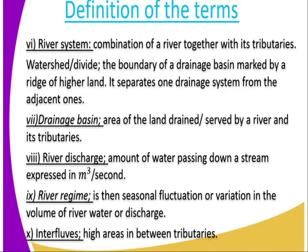Next is the watershed or divide. These are the boundaries of a drainage basin marked by the ridge of highland. It separates one drainage system from the adjacent one. The drainage basin is an area of land drained or served by a river and its tributaries. River discharge is the amount of water passing down a stream, usually expressed in cubic metres per second.